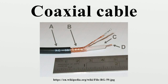Coaxial cable, or coax, is a type of cable that has an inner conductor surrounded by a tubular insulating layer, surrounded by a tubular conducting shield. Many coaxial cables also have an insulating outer sheath or jacket. The term coaxial comes from the inner conductor and the outer shield sharing a geometric axis. This coaxial cable was invented by English engineer and mathematician Oliver Heaviside, who patented the design in 1880.